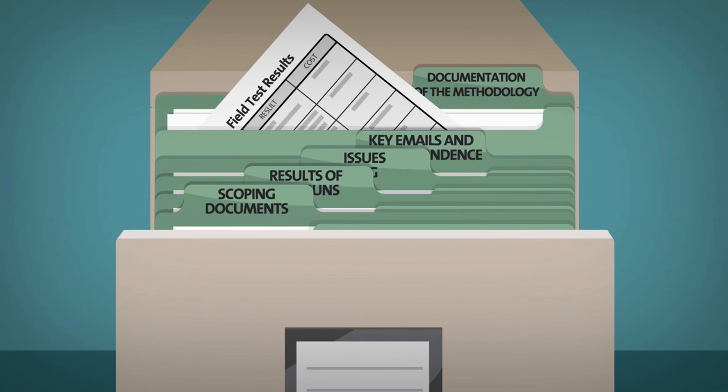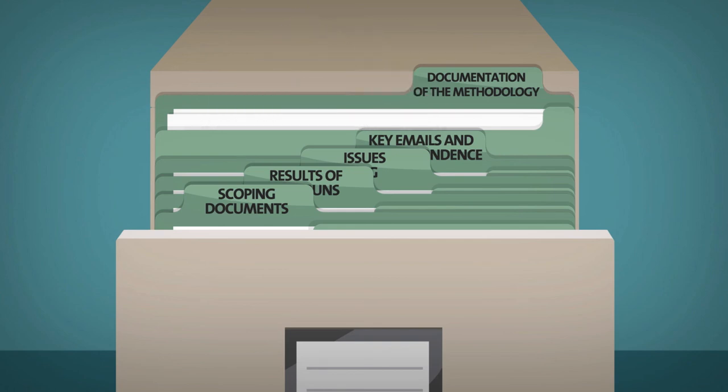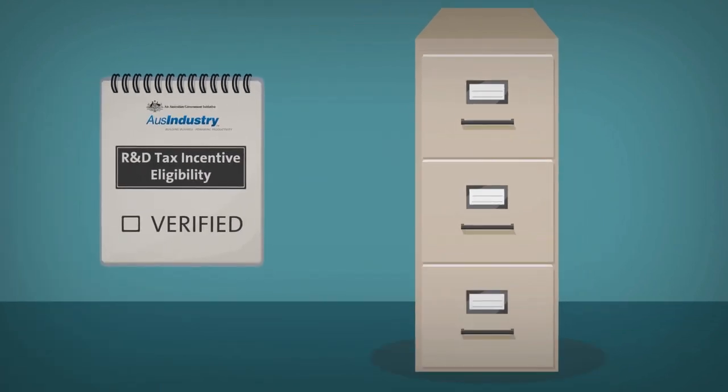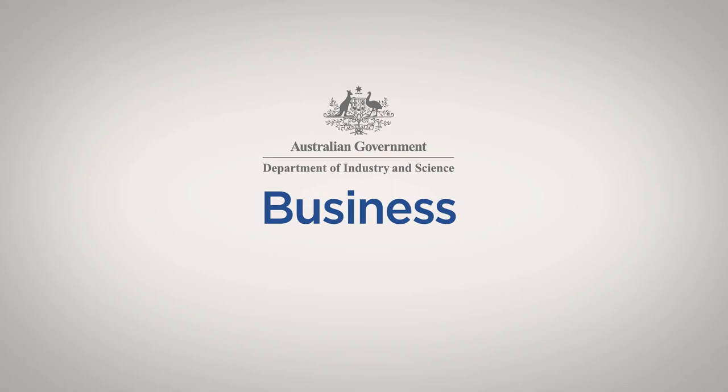In conclusion, by identifying core and supporting R&D activities, following the R&D tax incentive guidance, and keeping records, Windwake was able to fulfill the eligibility requirements for the R&D tax incentive and move forward with their work. For more information, visit business.gov.au or call 13 2846.